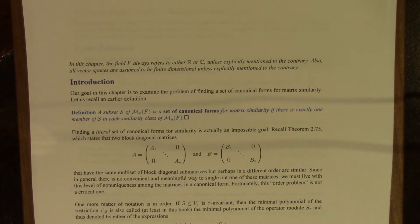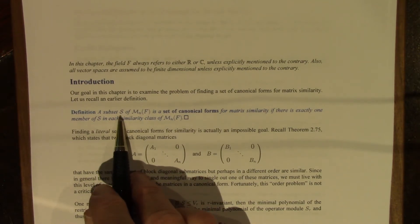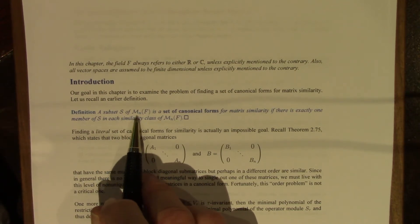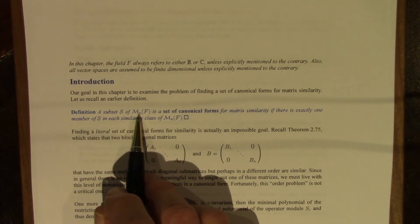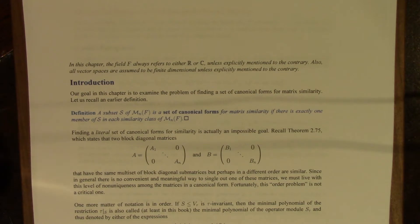Our goal in this chapter is to examine the problem of finding a set of canonical forms for matrix similarity. A subset S of the vector space of all matrices of size n by n over F is a set of canonical forms for matrix similarity if there is exactly one member of S in each similarity class.